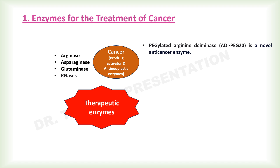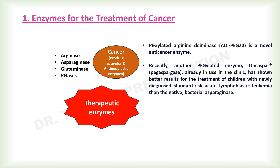Certain tumors like malignant melanoma and hepatocellular carcinoma are auxotrophic for arginine. PEGylated arginine deaminase (ADI-PEG20) is a novel anti-cancer enzyme. PEGylation is a process that conjugates polyethylene glycol (PEG) chains with proteins, peptides, or other molecules. ADI-PEG20 is an arginine-degrading enzyme that can inhibit human melanoma and hepatocellular carcinomas, which are auxotrophic for arginine due to a lack of argininosuccinate synthetase activity. Recently, another PEGylated enzyme, oncaspar (pegasparagase), has shown better results for the treatment of children with newly diagnosed standard-risk acute lymphoblastic leukemia than native bacterial asparaginase.